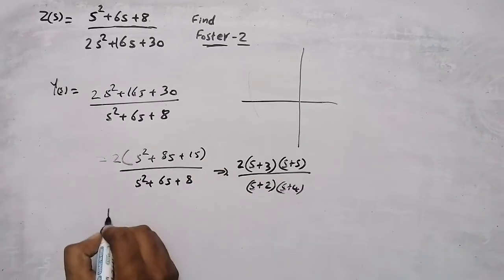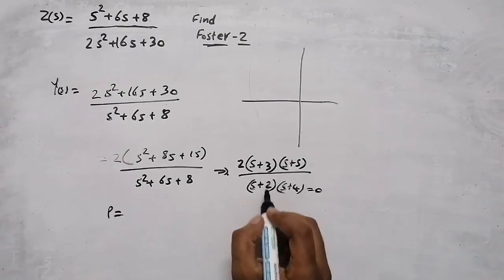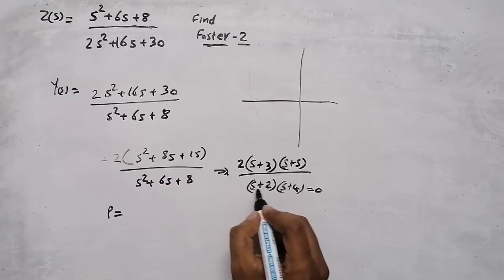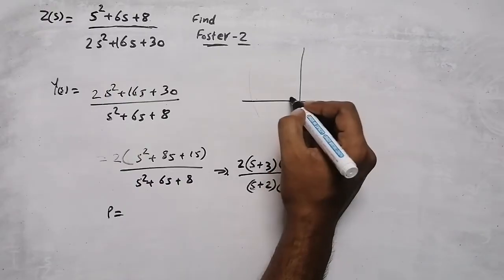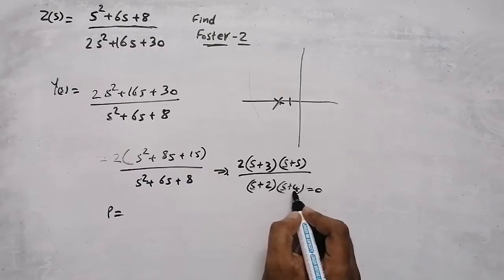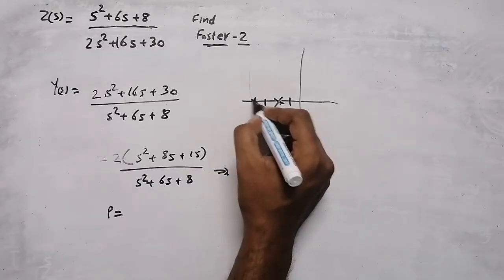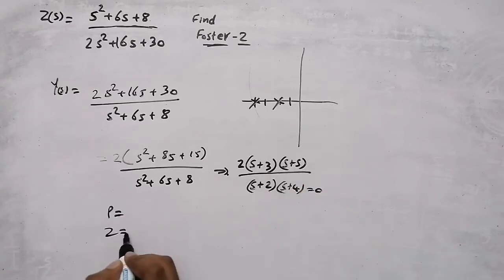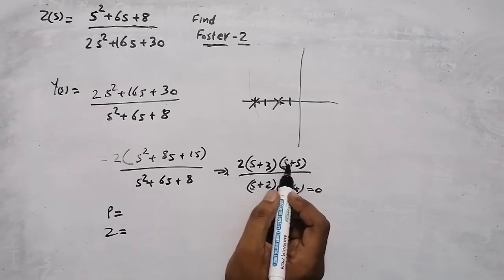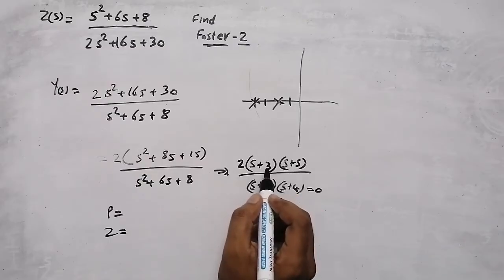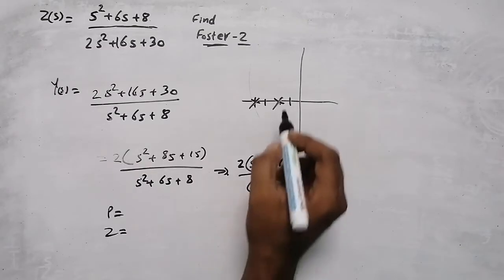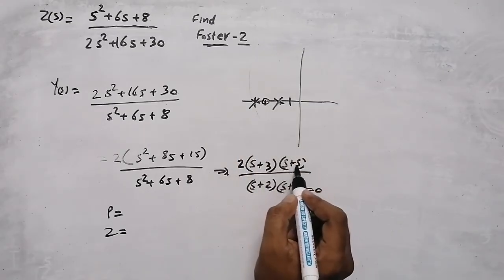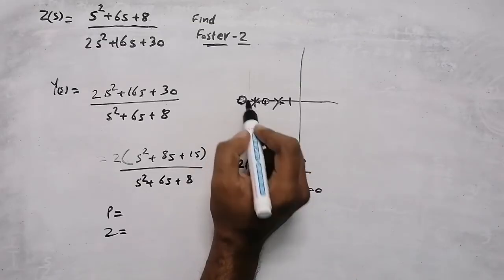To find the poles, equate the denominator to zero: s + 2 = 0 gives s = −2, and s + 4 = 0 gives s = −4, so we have poles at −2 and −4. To find the zeros, equate the numerator to zero: s + 3 = 0 gives s = −3, and s + 5 = 0 gives s = −5, so we have zeros at −3 and −5.